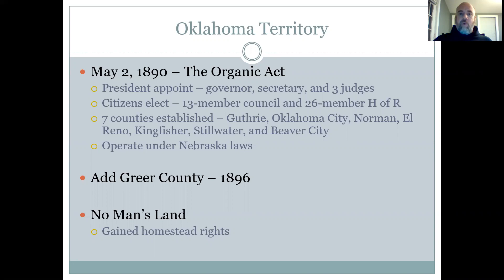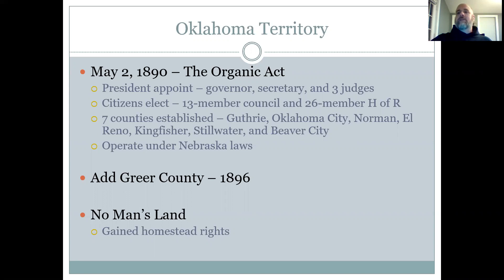It was made part right away, as it was one of the parts added to Oklahoma Territory quickly. Homestead rights simply means people could settle there and do the five-year plan — if they could make developments, build up on it, and farm upon it, then that land could become theirs.